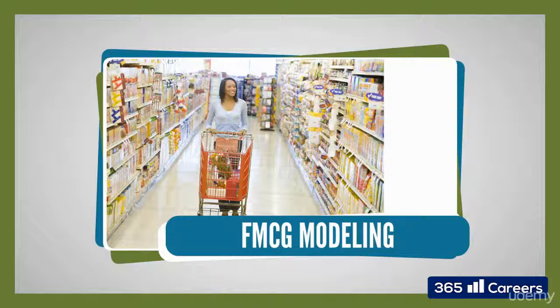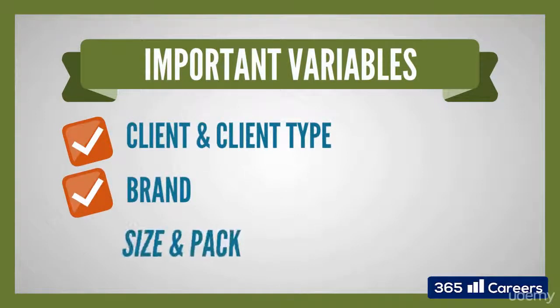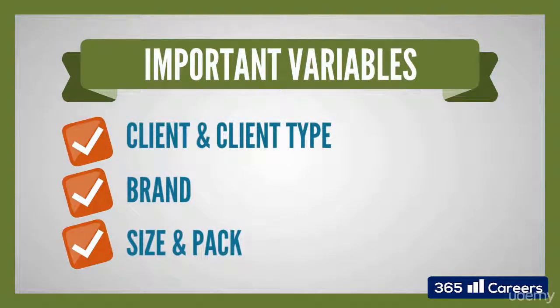Drinko is a soft drinks producer. Our goal here will be to build a model that allows the company management to see the volumes that were sold, the revenue, and margins that were obtained. And provide a breakdown per month, client, client type, brand, size, and pack. These are the important indicators that need to be analyzed in order to understand whether the company can improve its product offering and mix.